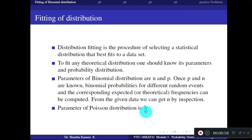The parameter for Poisson distribution is lambda, and the parameters for binomial distribution are n and p. You should know these parameters and remember the probability density function. The PDF for binomial distribution is nCx * p^x * q^(n-x). The PDF for Poisson distribution is e^(-λ) * λ^x / x!.